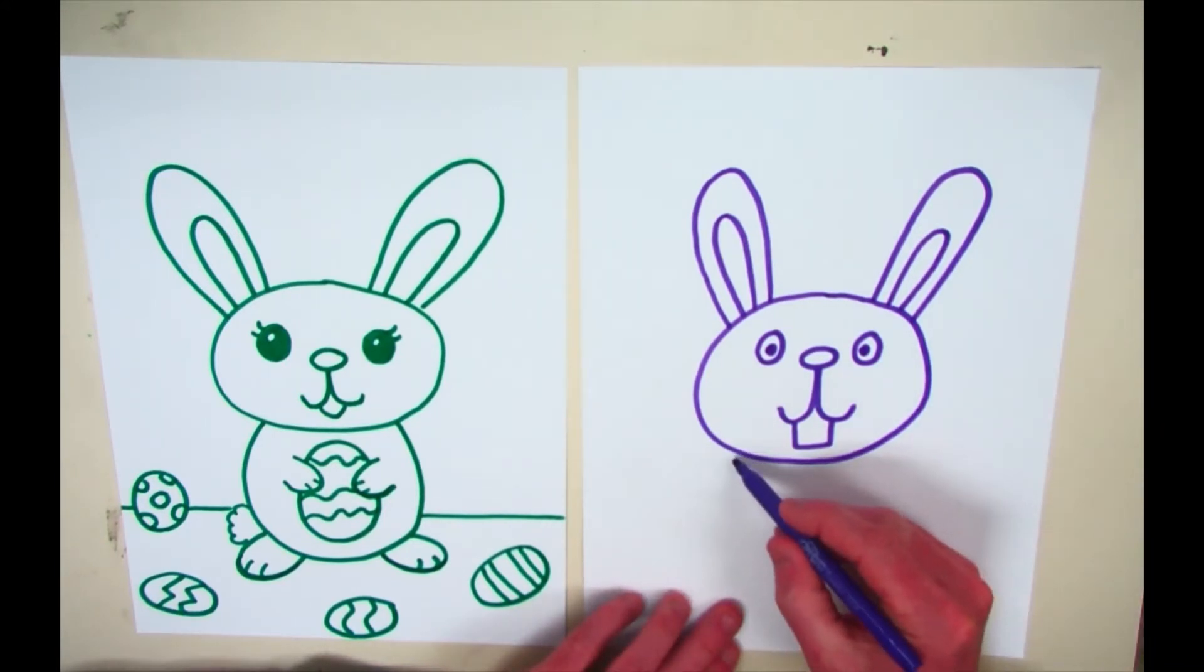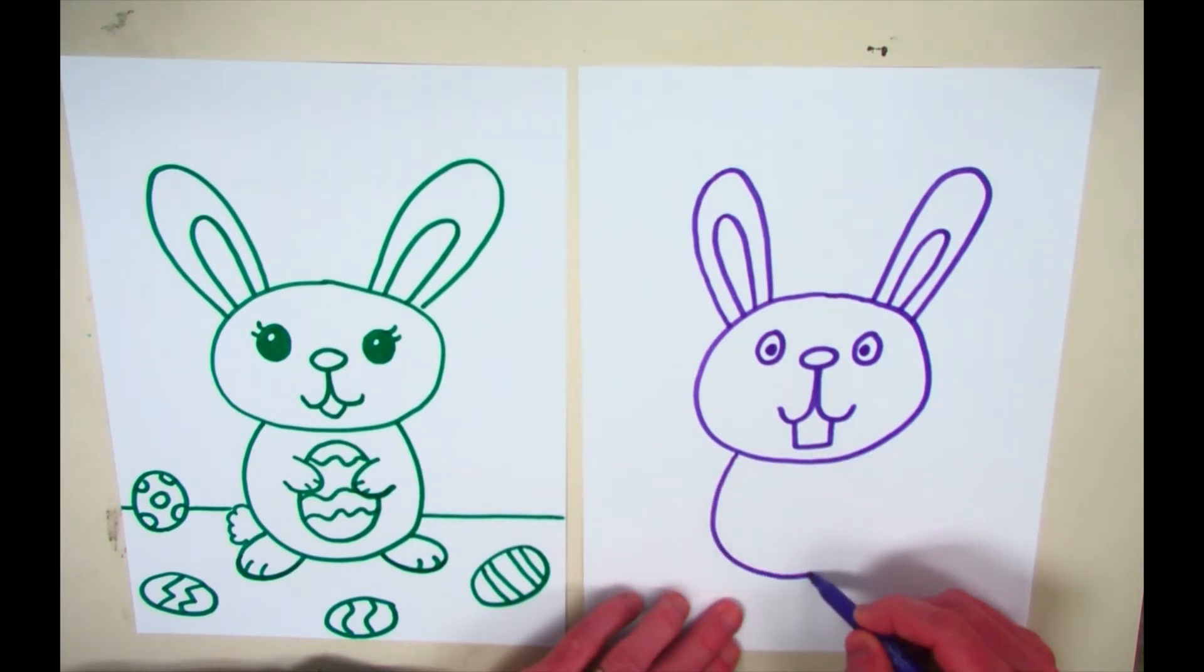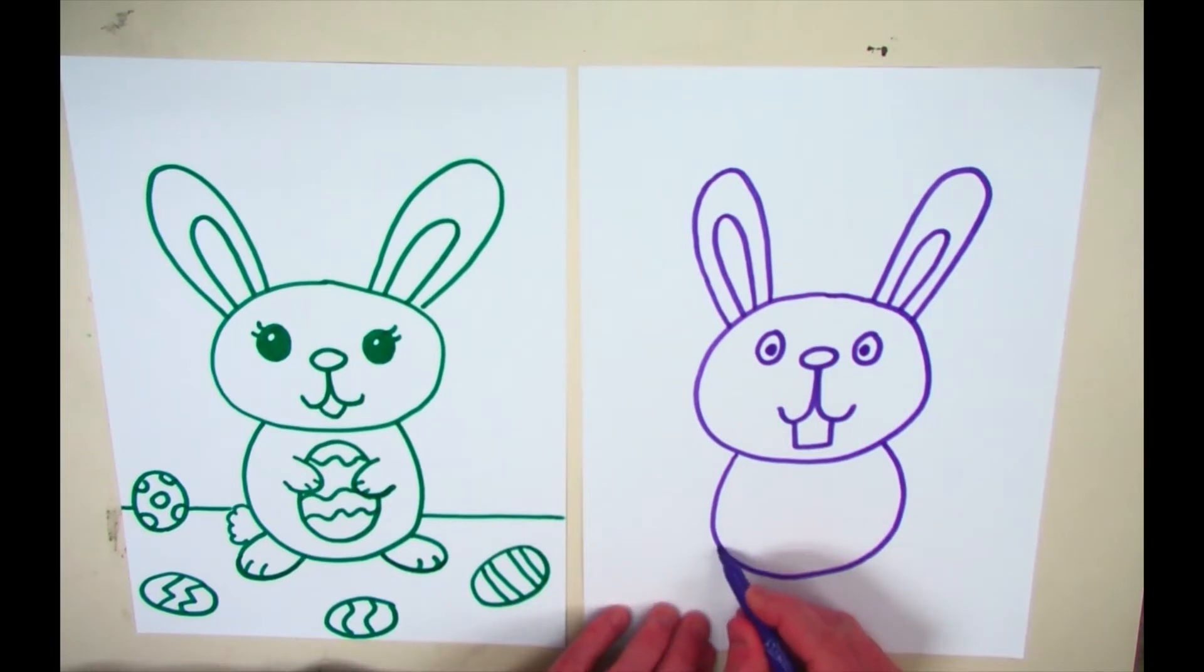Now, as far as his body goes, you're going to just put a little oval shape that's cut off because his head's in the way. And then we'll put on his little feet.